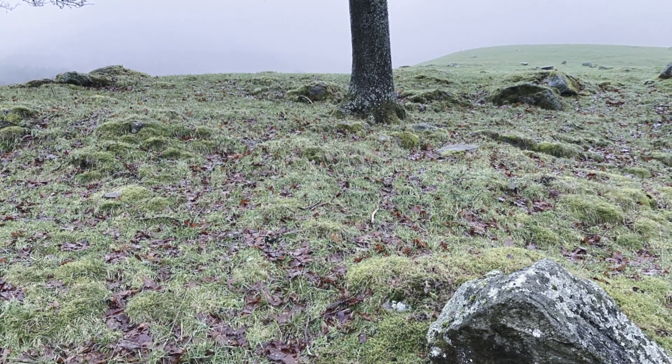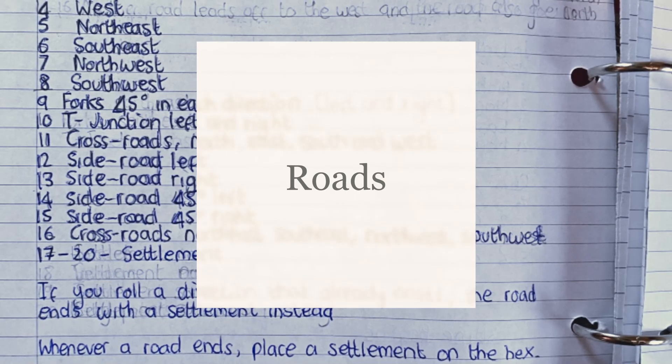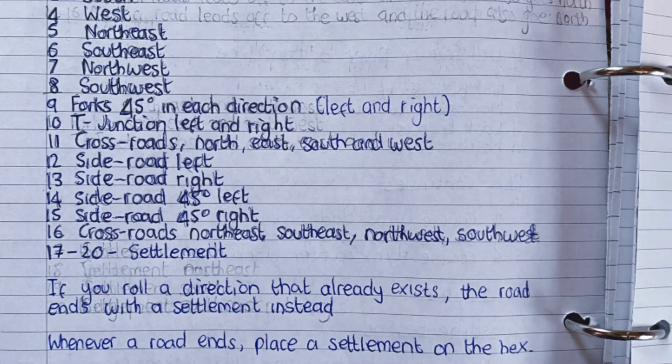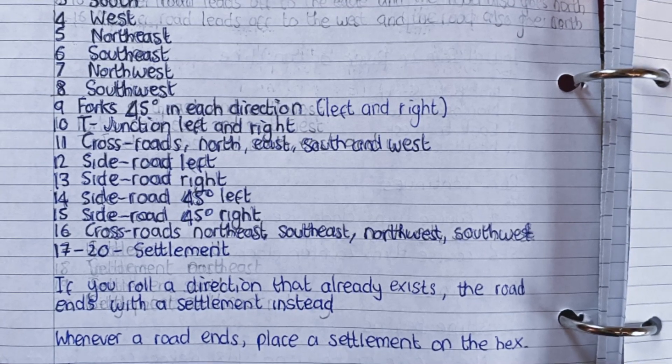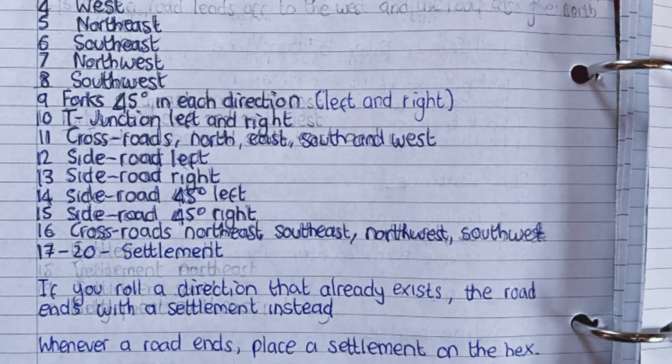At the start of a blank hex map, it is assumed that the party or single player character begins on a settlement — I will cover settlements later. The settlement has a road leading from it in a random direction, so roll for the terrain type first and then the direction of the road on a d20: 1 is north, 2 east, 3 south, 4 west, 5 north east, 6 south east, 7 north west, 8 south west, 9 it forks 45 degrees in each direction left and right, 10 is a T junction left and right, 11 crossroads north/east/south/west, 12 side road left, 13 side road right, 14 side road 45 degrees left, 15 side road 45 degrees right, 16 crossroads north east/south east/north west/south west, 17 to 20 is a settlement, which we will cover later.